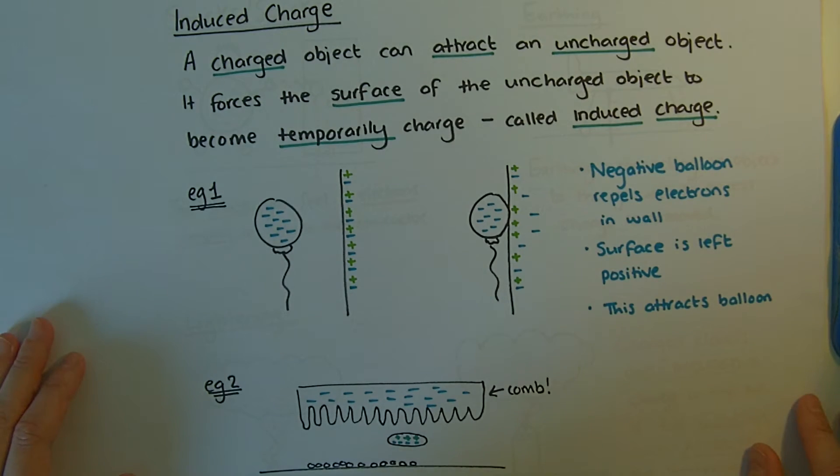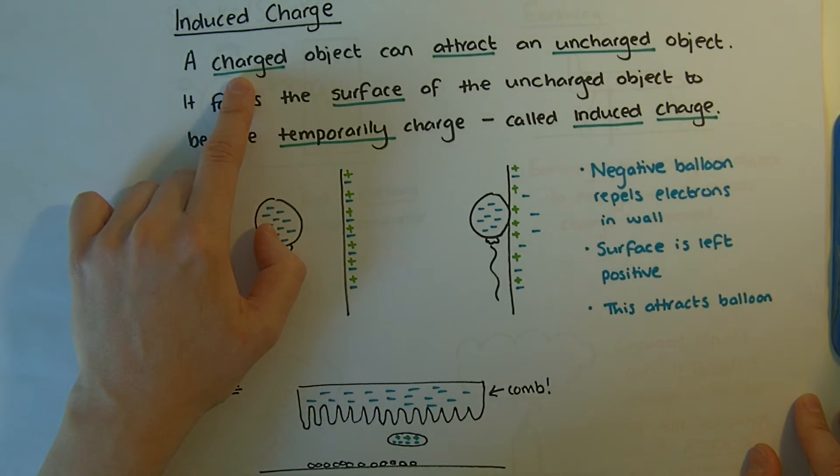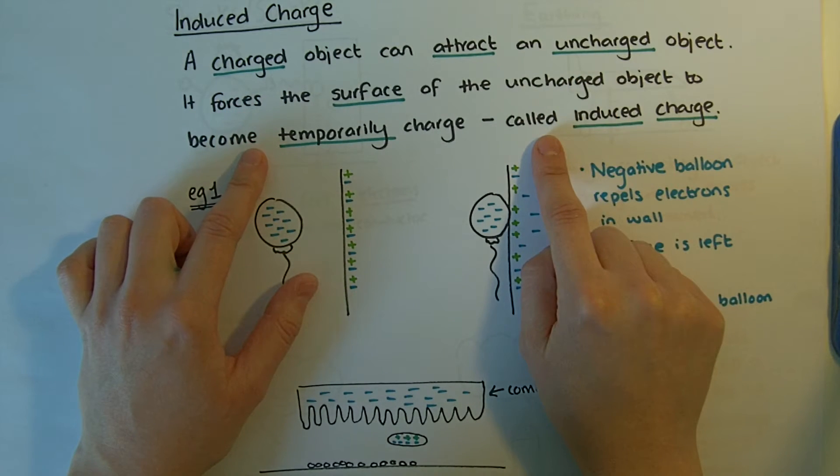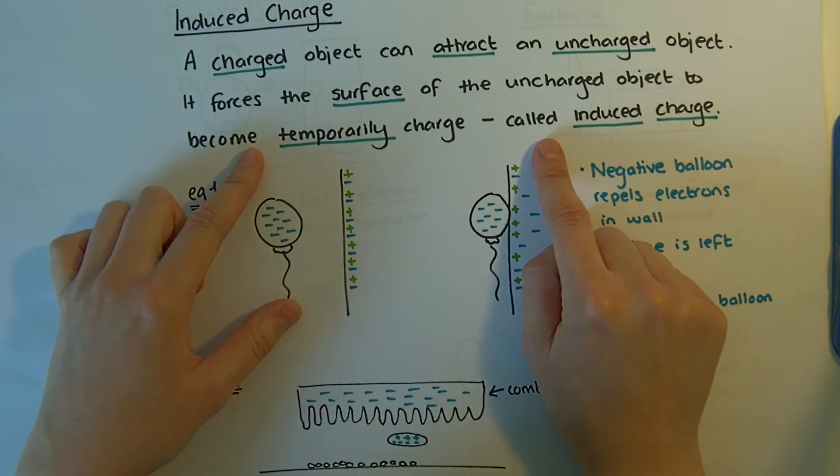There's another way that we can make objects attract, and that's if we have one object that is charged and one object that is uncharged. What happens is the charged object forces the surface of the uncharged object to become temporarily charged. We say it's induced a charge, it's forced it to be charged.